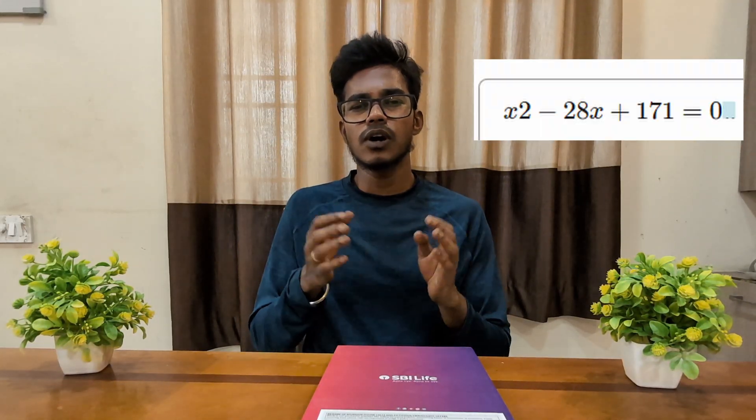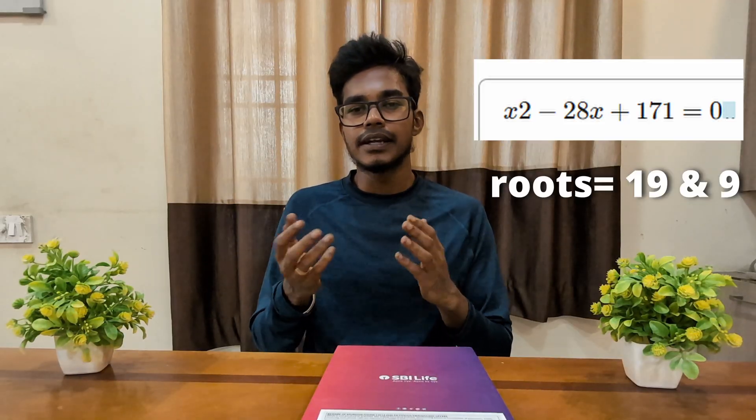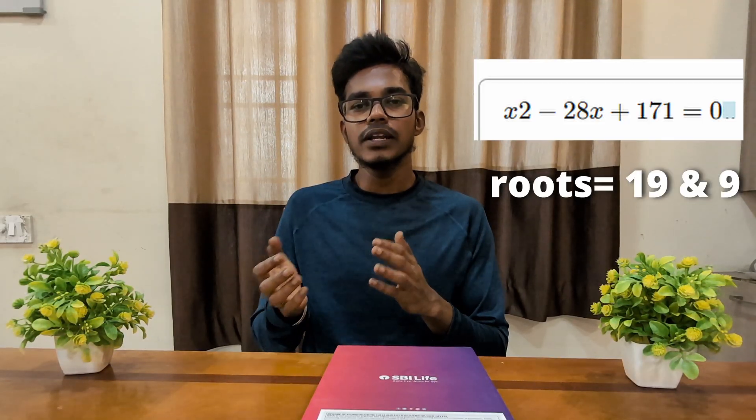The next tip is to learn multiplication tables up to 1 to 20, which is more than enough. I don't want you to memorize every result — I just want you to know which number comes in which table. For example, when you approach a quadratic equation like x² minus 28x plus 171, I will simply say 19 into 9 because 19 plus 9 is 28 and 19 into 9 is 171. You just need to know where 171 comes in the 19 table. Just know which number comes in which table — that is more than enough.